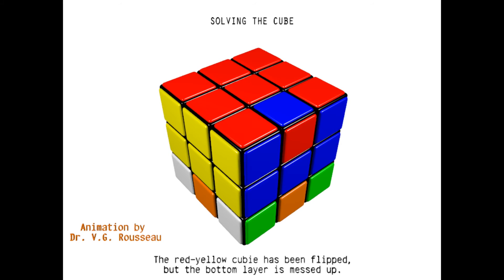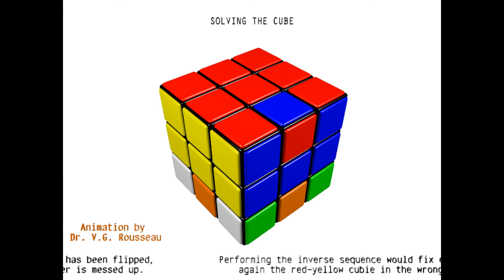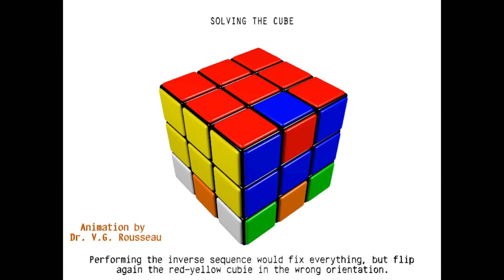So you see that the red-yellow cubie has been flipped. Of course, by doing so, the rest of the cube is messed up. And the question that arises is how to fix everything? There is a very simple way to do that. Simply apply the inverse sequence. If we do this, everything that was messed up will be restored, since the inverse sequence will cancel the original sequence. But then the cubie that we just flipped will be flipped again and will end up with the wrong orientation. That's not what we want. However, we want to flip the red-blue cubie.